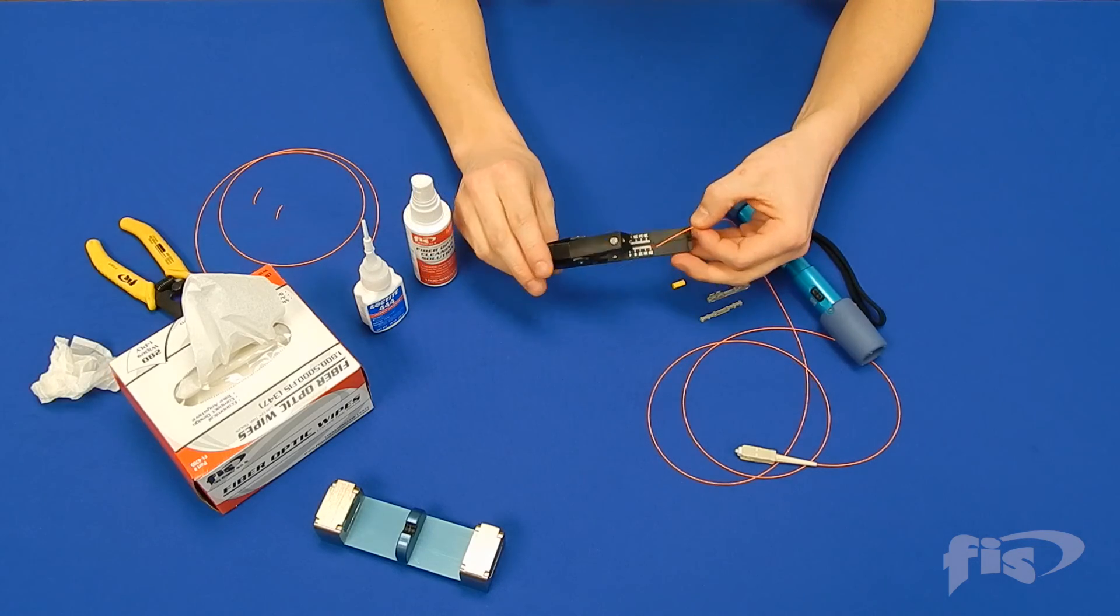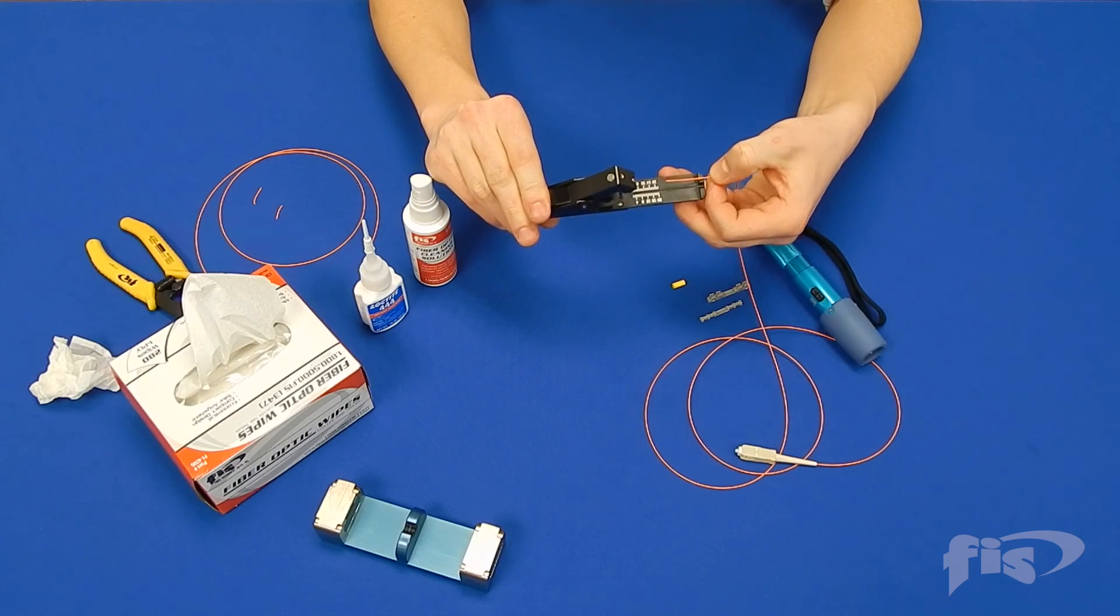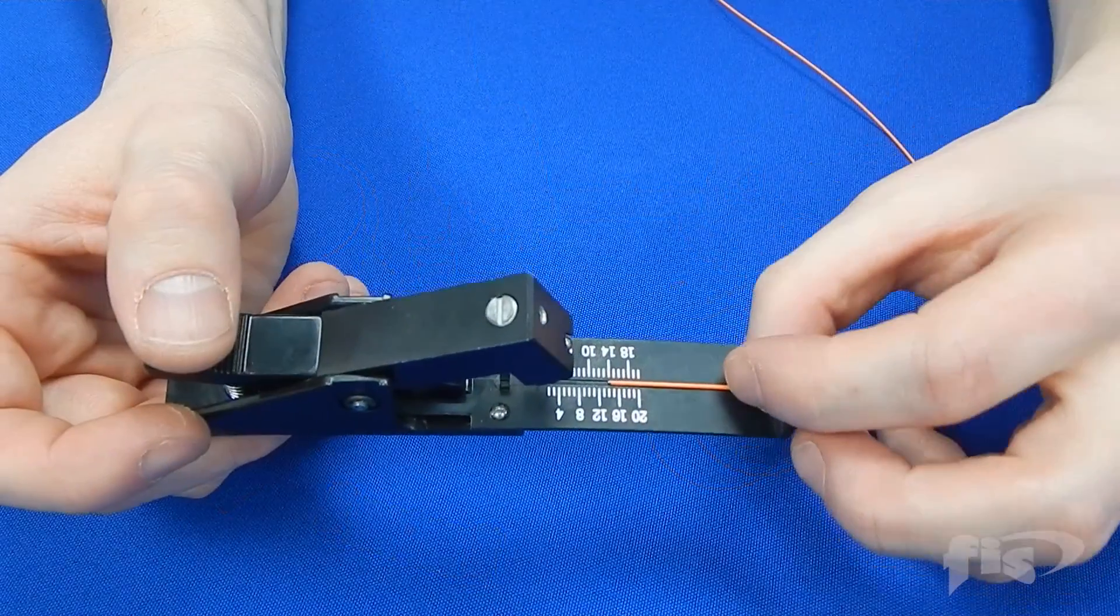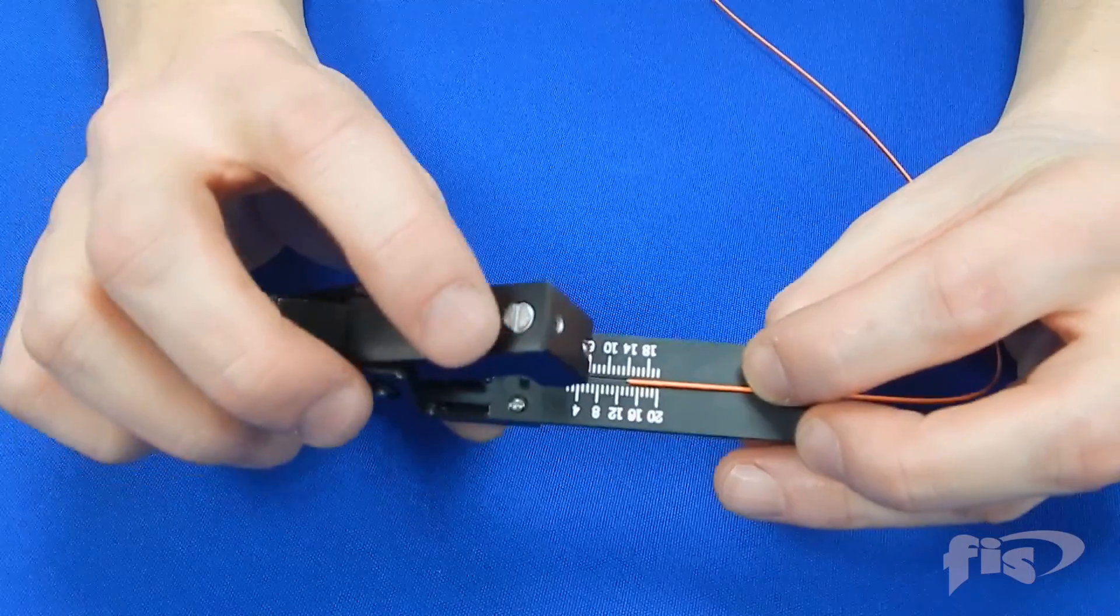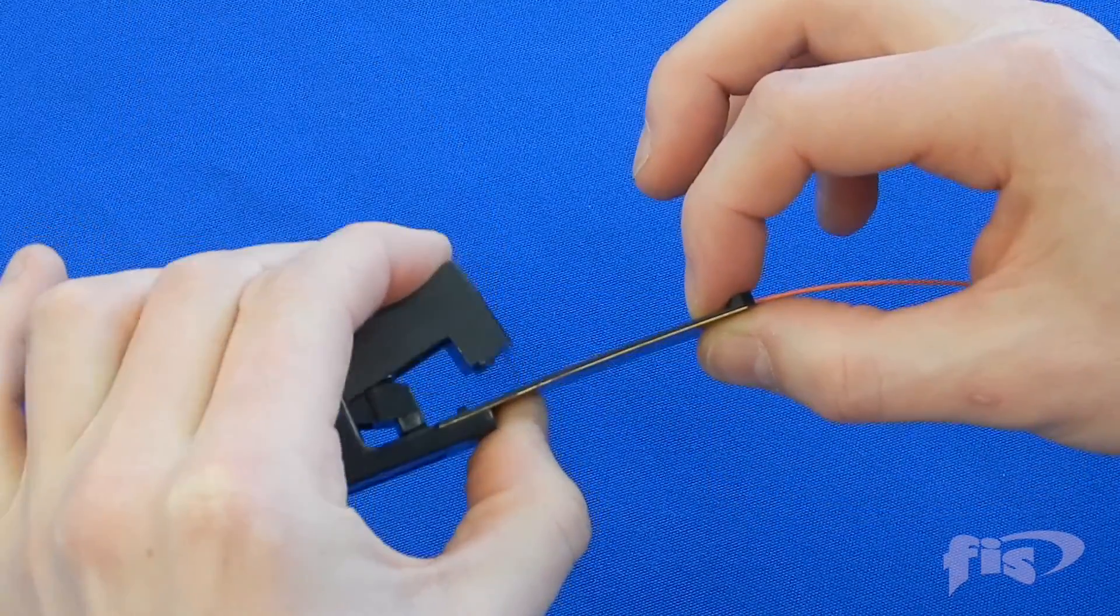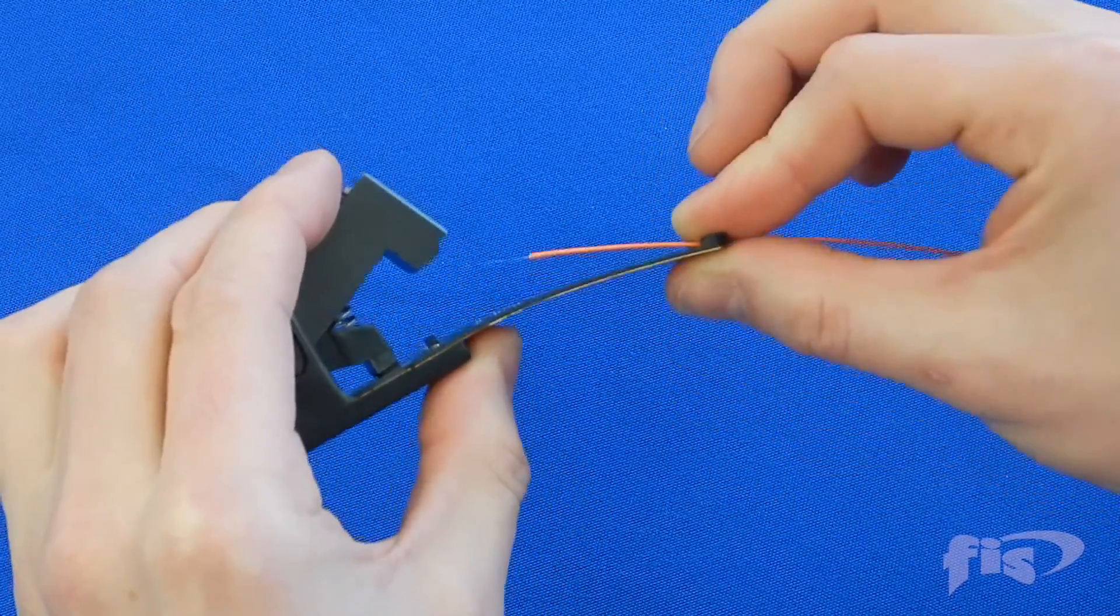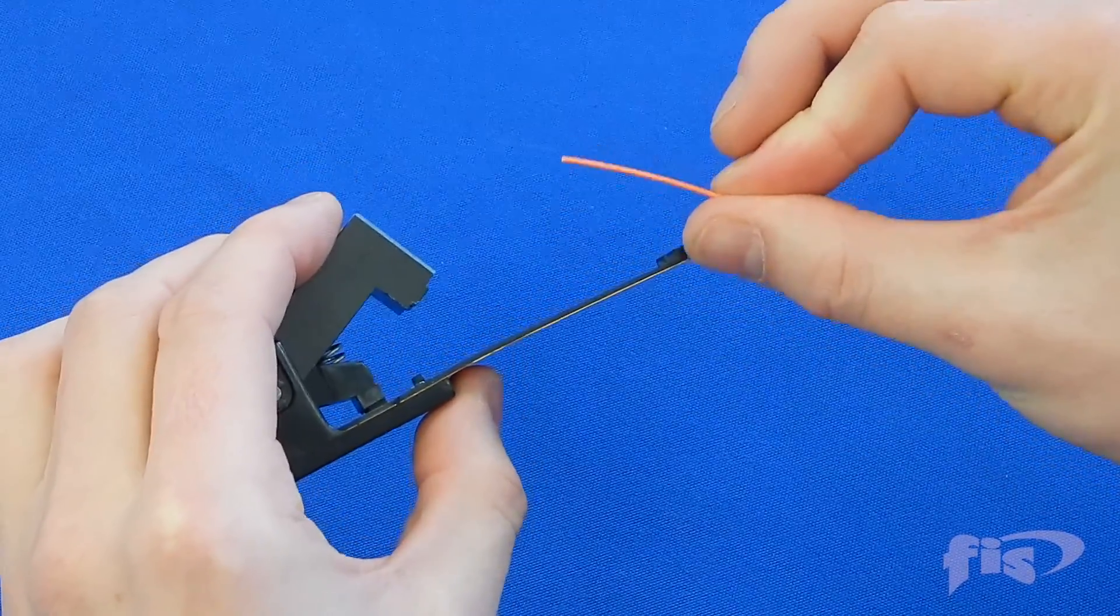Take the field cleaver and place the 900 micron buffer to the 14mm line on the cleaver tail. Lock in place and gently bend the tail until the fiber is scored and cleaved.